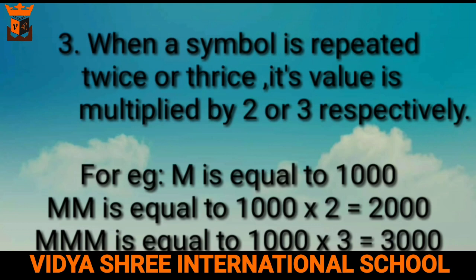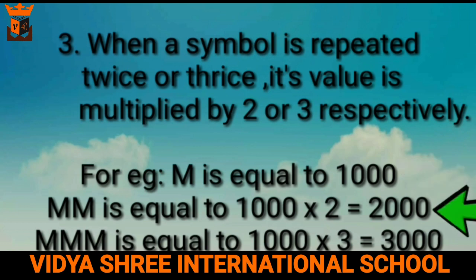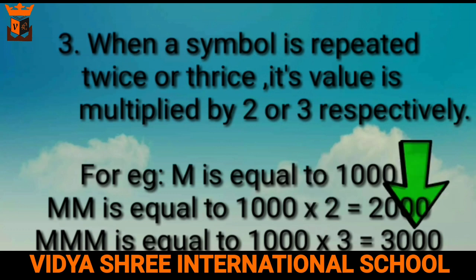The third point to remember: when a symbol is repeated twice or thrice, its value is multiplied by 2 or 3 respectively. For example, M is equal to 1000; MM is equal to 1000 multiplied by 2, which is 2000; MMM is equal to 1000 multiplied by 3, which is 3000.